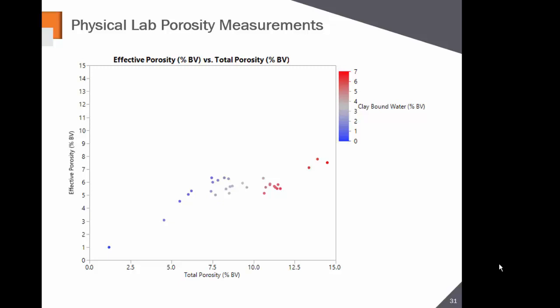This is why petrophysicists always compute V-shale and total clay to calculate clay-bound water. Overlaying smectite concentrations — there is smectite in this play — you can see the samples with the big discrepancy between effective and total porosity are the samples with high concentrations of smectite. So you need to understand you want to avoid smectite as a target zone and be careful about what drilling mud you choose.